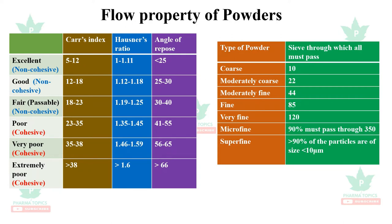Extremely poor powders have Carr's index greater than 38, Hausner ratio greater than 1.6, and angle of repose greater than 66. Regarding sieve classifications: coarse powders pass entirely through sieve number 10; moderately coarse through sieve 22; moderately fine through sieve 44; fine powders through sieve 85; very fine through sieve 120; microfine — greater than 90% must pass through sieve 350; and superfine must pass through a sieve with 10 micrometer diameter.